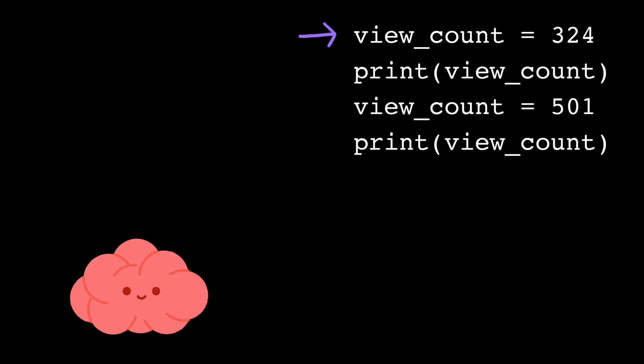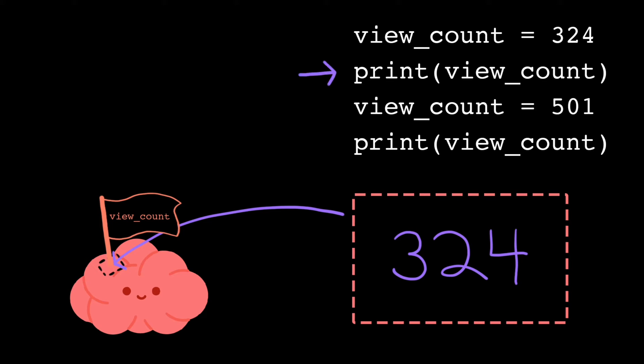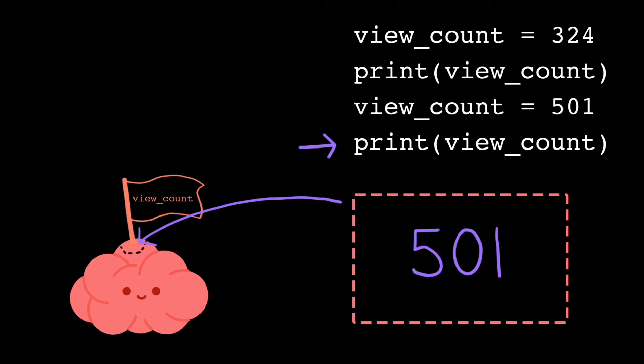So, when I access view_count on line 2, this prints 324. But when I access view_count on line 4, this prints 501.